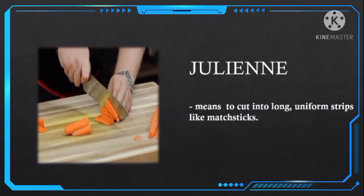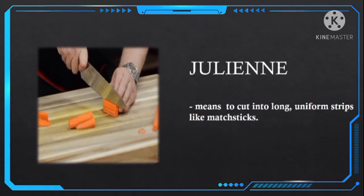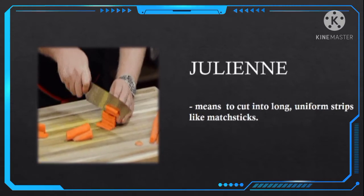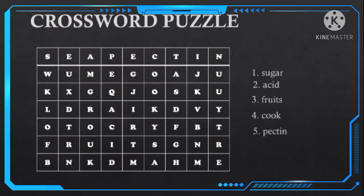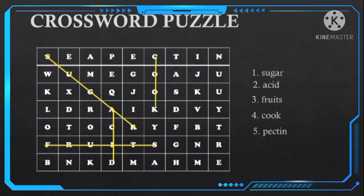Great job! I am glad that you've learned a lot from our last topic. So at this moment, we will have another activity, and it is called the crossword puzzle. Solve the puzzle below by finding the following words and connecting them: sugar, acid, fruits, cook, and pectin.